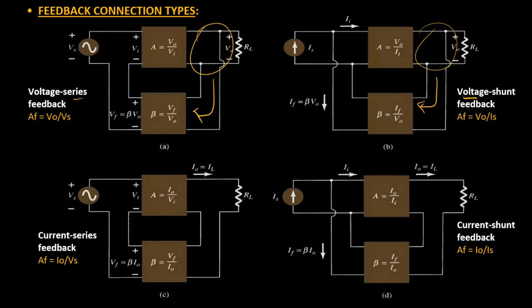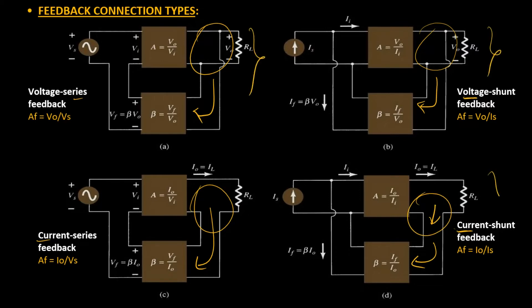Likewise, current actually refers to tapping of some output current through the feedback network. Wherever you find current in the name, you will see that we are tapping a fraction of output current through the feedback path. The terms voltage and current basically refer to the connection at the output side of all four networks.